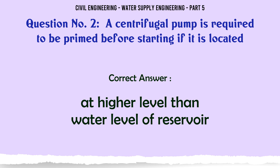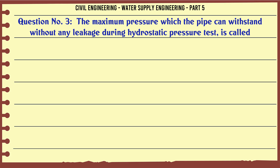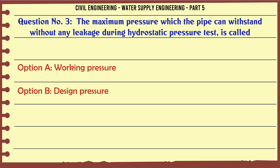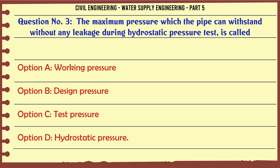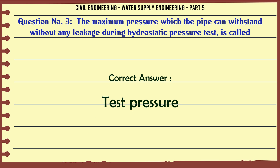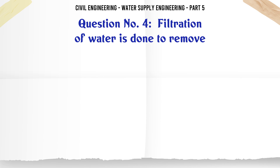The maximum pressure which the pipe can withstand without any leakage during a hydrostatic pressure test is called: A. Working pressure, B. Design pressure, C. Test pressure, D. Hydrostatic pressure. The correct answer is Test pressure.